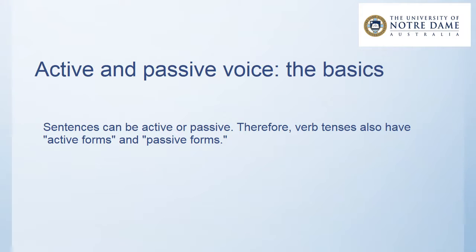Sentences can be active or passive. Therefore, verb tenses also have active forms and passive forms.